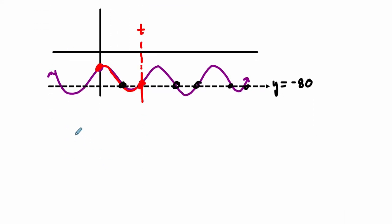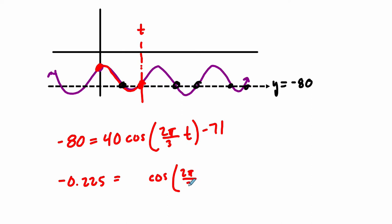That means that in our equation, negative 80, which is y of t, equals 40 times the cosine of 2π over 3t minus 71. Our unknown is this piece right here. So we add 71 to both sides and then divide by 40. And when we do that, we add 71, negative 9 divided by 40, negative 0.225.